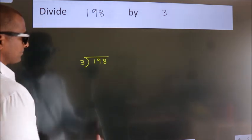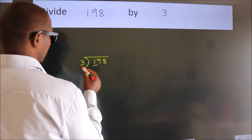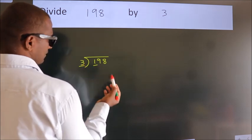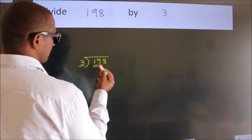Next. Here we have 1, here 3. 1 smaller than 3. So we should take two numbers, 19.